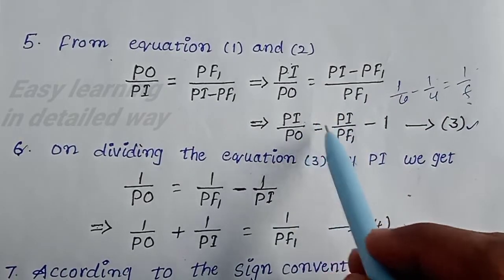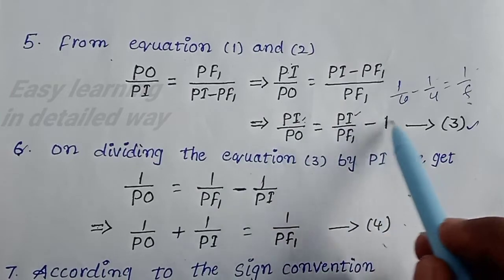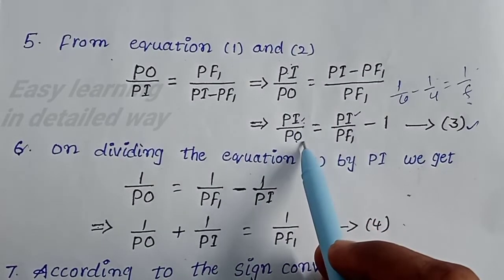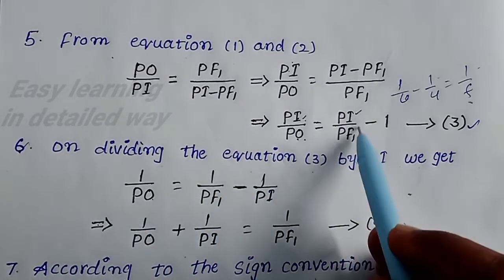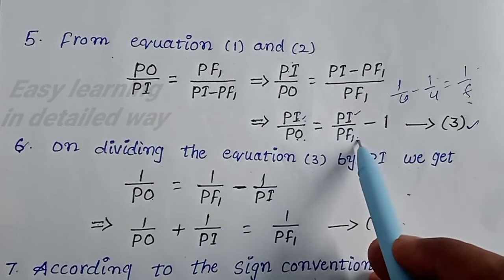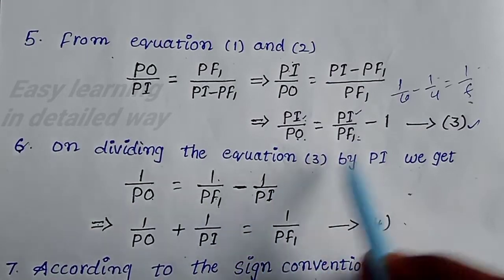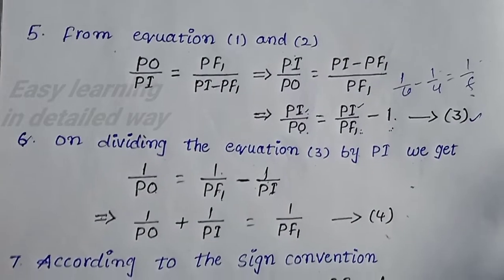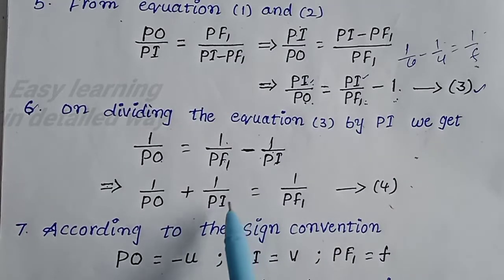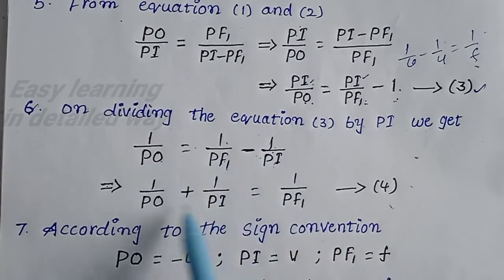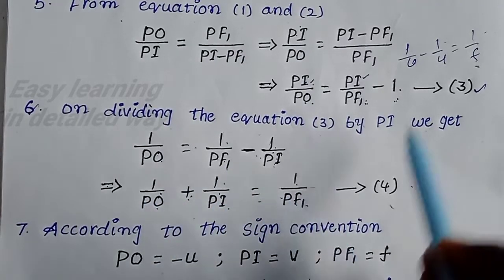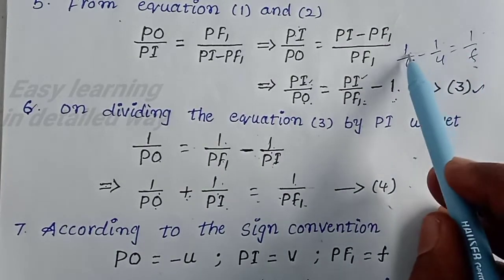Now dividing equation by PI: 1 by PF1 minus 1 by PI equals 1 by PO. Rearranging — transposing minus 1 by PI — then 1 by PO plus 1 by PI equals 1 by PF1. This is equation 4.